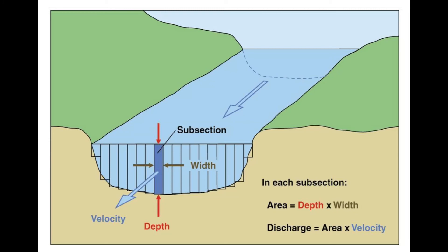Then you take your velocity, which you can simply get by floating something like a piece of wood down the river in a couple of different spots and averaging that out. Take the velocity and the area, multiply them together, and you get how much water is flowing per second.